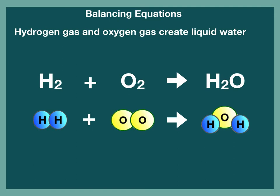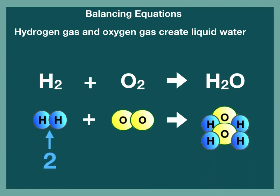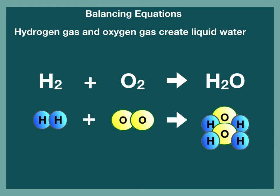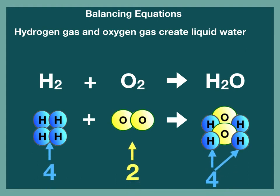In order to balance the equation, we need to add more of the molecules we already have. Let's add another water and see what happens. Oxygen is now equal on each side. However, now the hydrogen is unequal. What do you need to do in order to make the hydrogen equal? Is this equation balanced? Now both the hydrogen and oxygen are equal, and this equation is balanced.